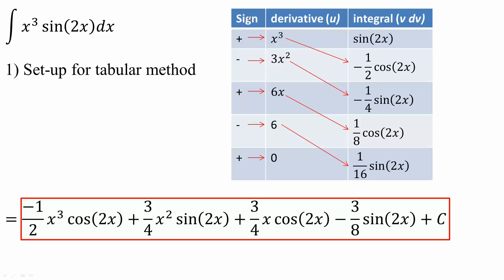The tabular method has three columns: sign, derivative, and integral. The sign column alternates between positive, negative, positive, negative, positive, negative.